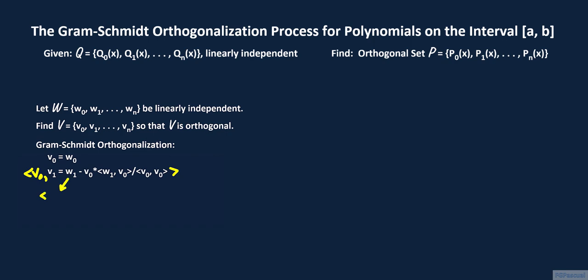The first term on the right side gives us the inner product of V sub 0 and W sub 1. From the term that we are subtracting, we get a factor which is the inner product of V sub 0 with itself. The inner product of V sub 0 with itself cancels out, so we are left with the inner product of V sub 0 and W sub 1 minus itself. Therefore the inner product of V sub 0 and V sub 1 is zero, so that V sub 0 and V sub 1 are orthogonal.